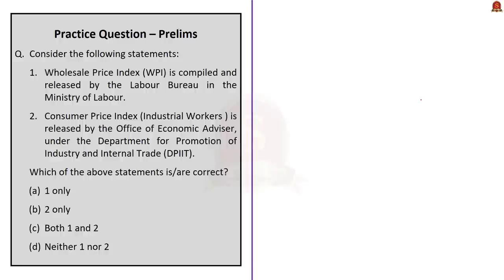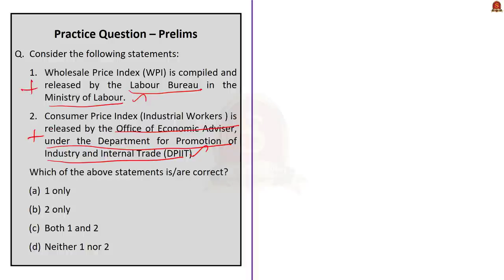The second practice question: two statements are given. First statement: WPI is compiled and released by the Labor Bureau in the Ministry of Labor. Second statement: CPI for Industrial Workers is released by the Office of Economic Advisor under the Department for Promotion of Industry and Internal Trade. Both statements are incorrect — they have been interchanged. Actually, CPI for Industrial Workers is compiled by the Labor Bureau in the Ministry of Labor, while WPI is released by the Office of Economic Advisor under the Department for Promotion of Industry and Internal Trade. So the correct answer is option D, neither one nor two.